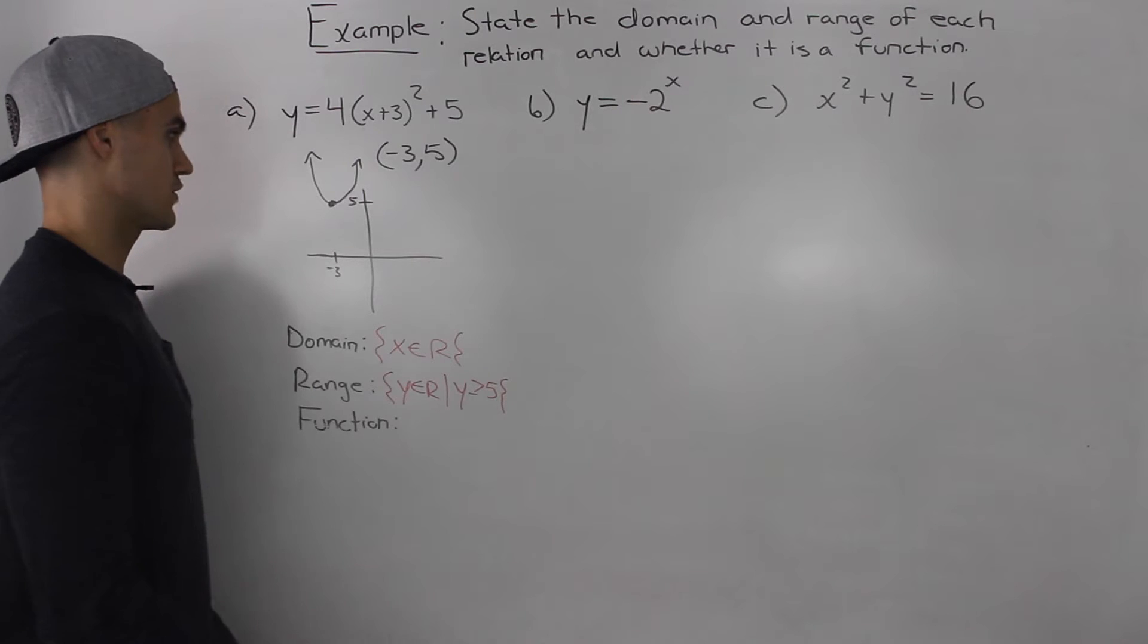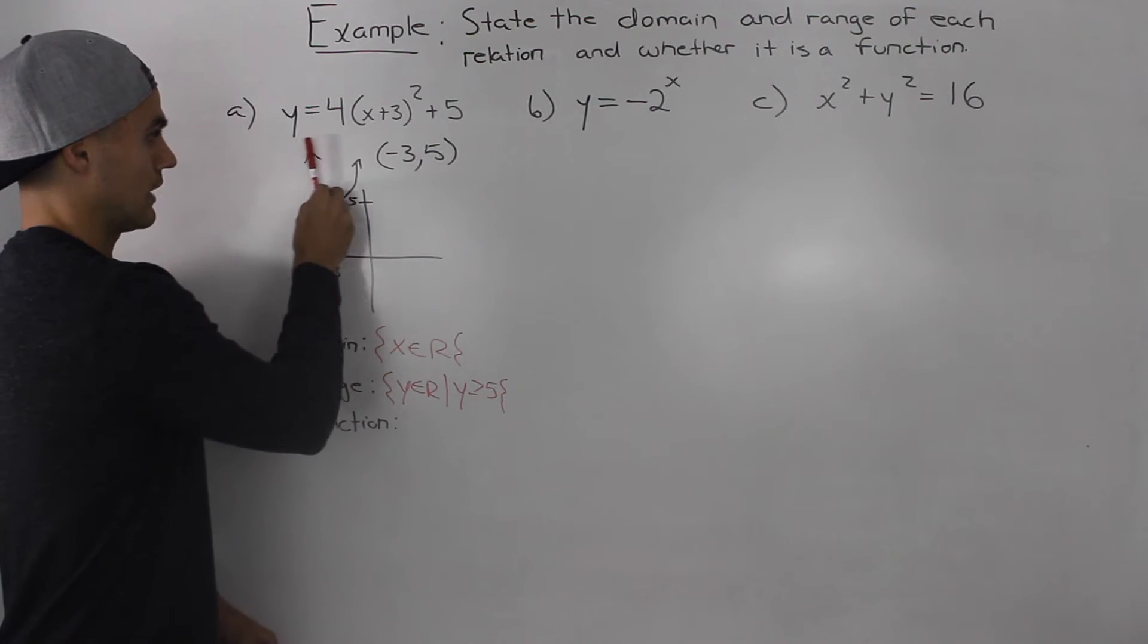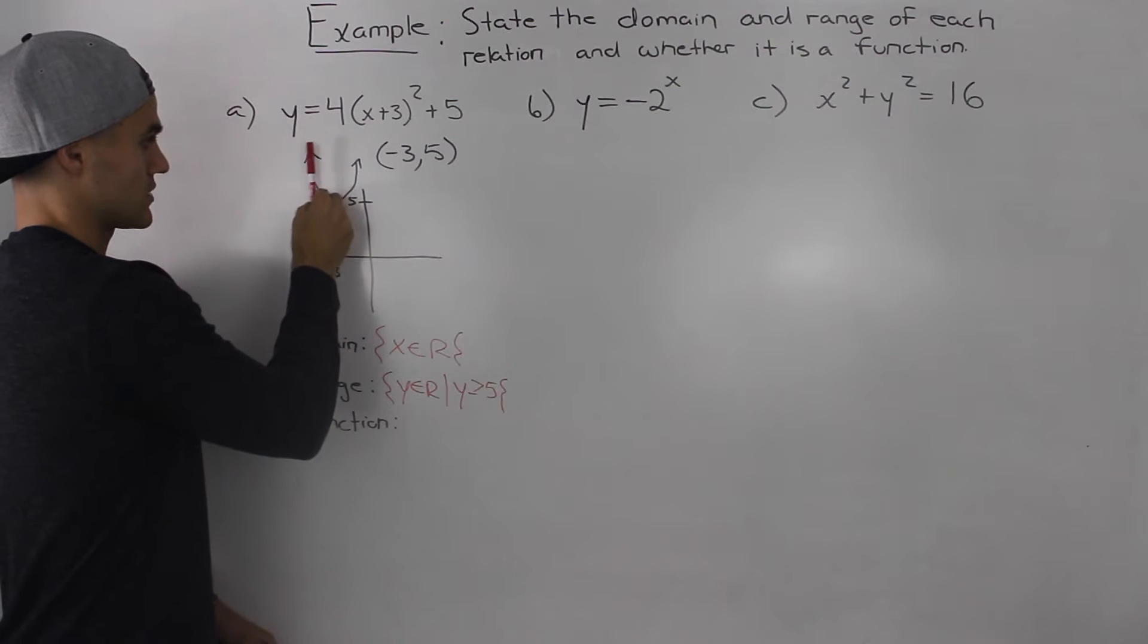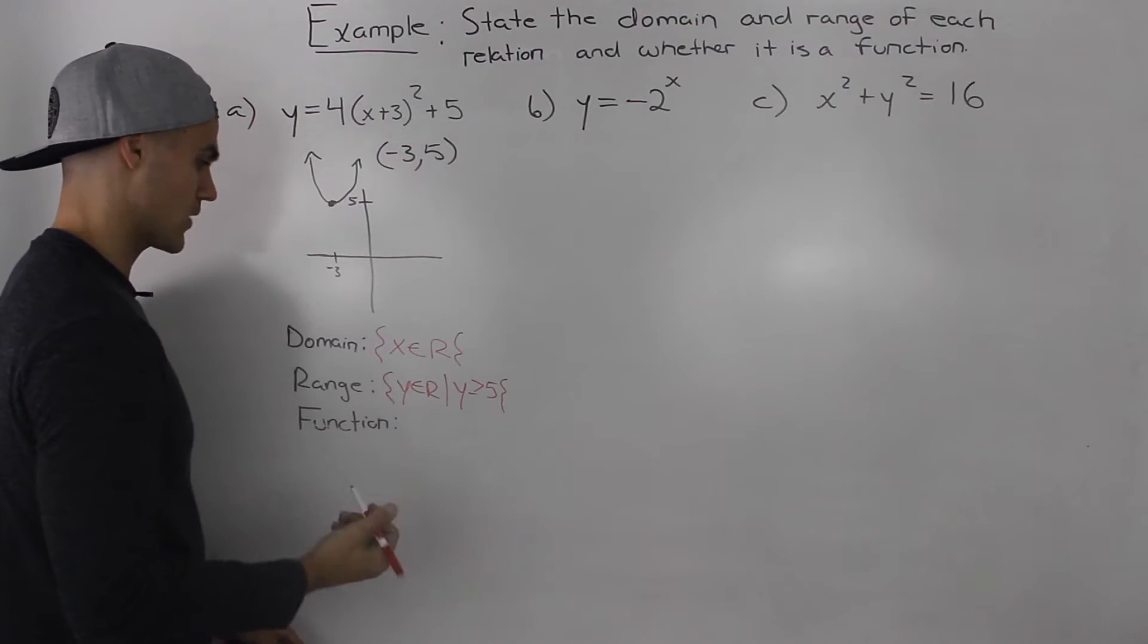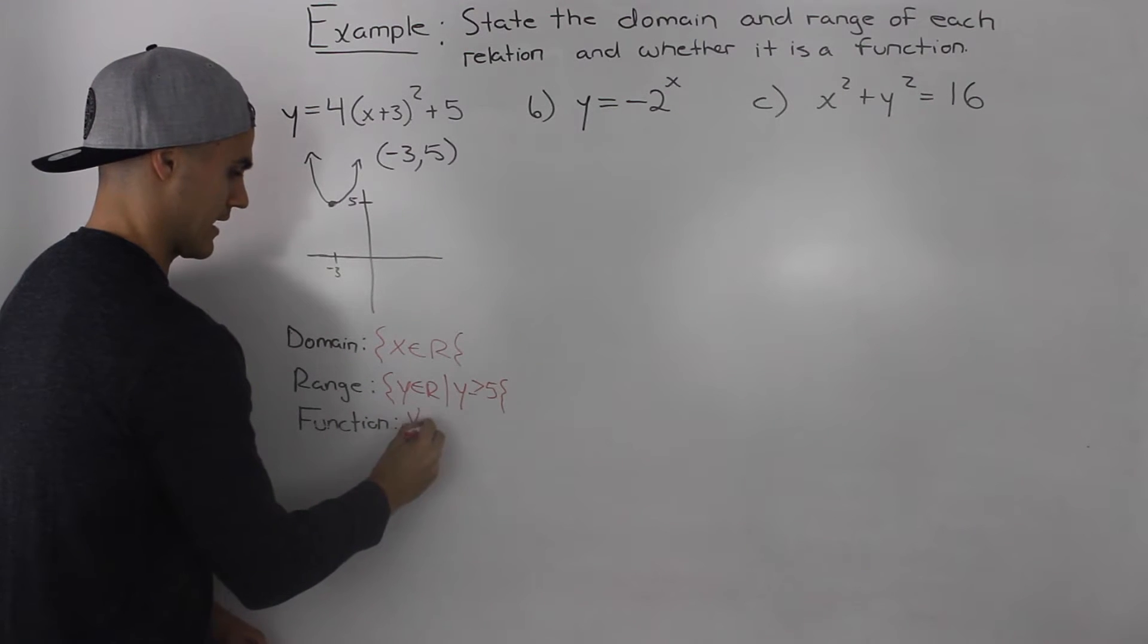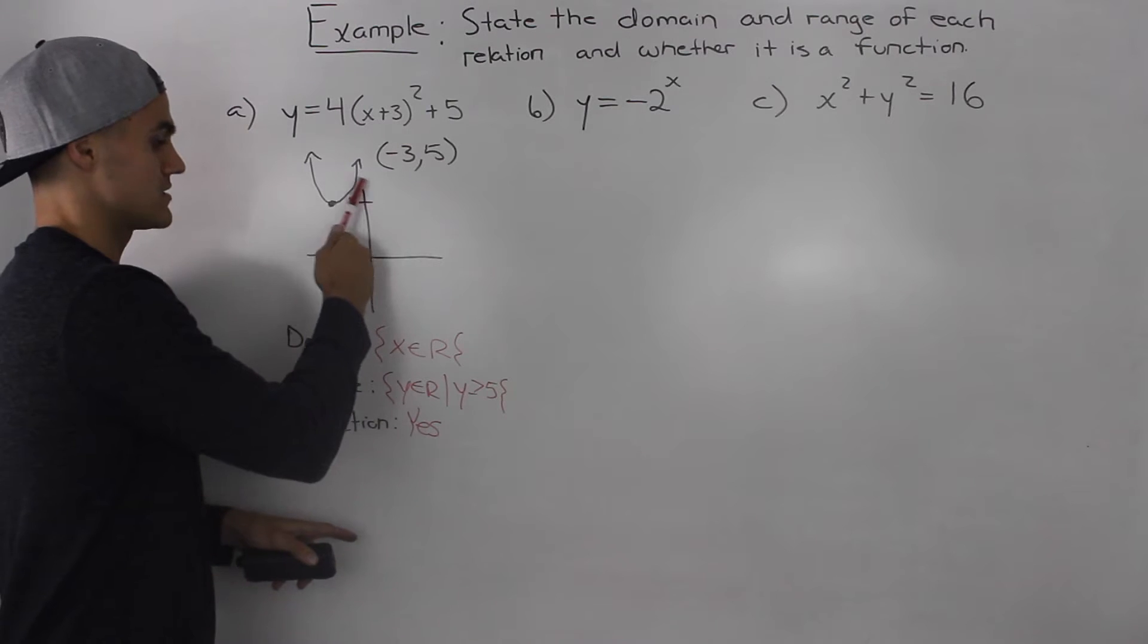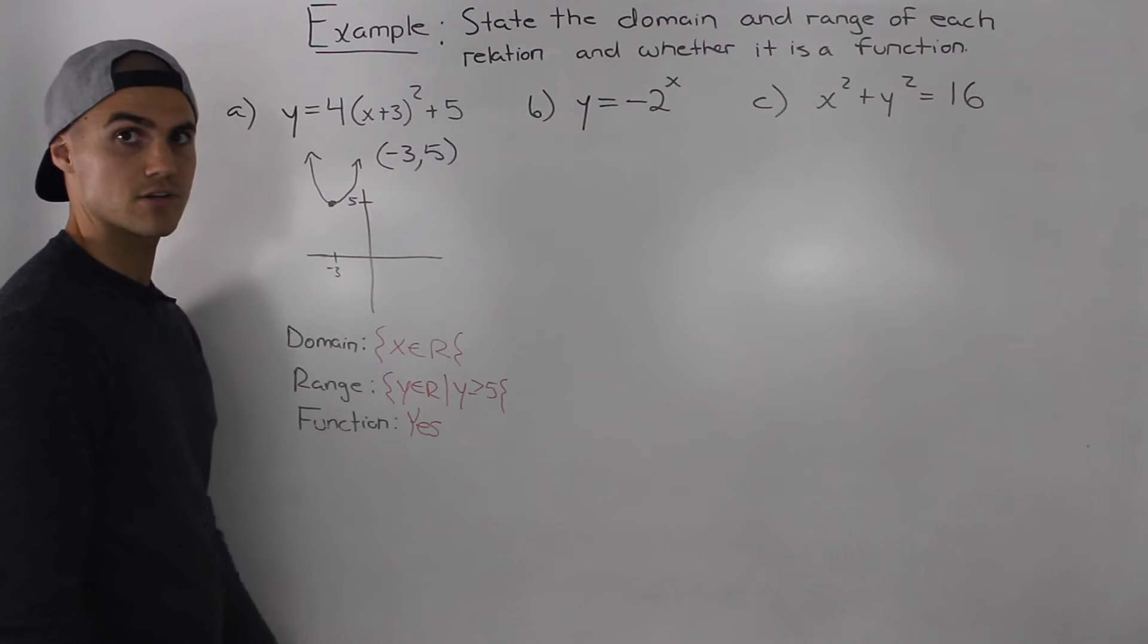Now is this relation a function? If we run a vertical line through it, we can tell that it is a function. There is no point on the graph where it's going to touch the vertical line twice. And a regular parabola, as we've mentioned many times, is always a function. So the answer is yes.